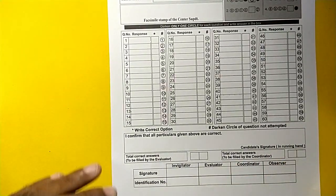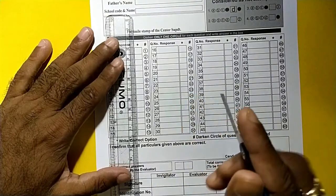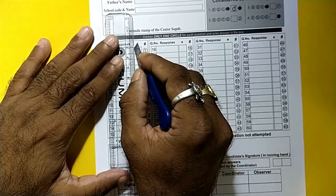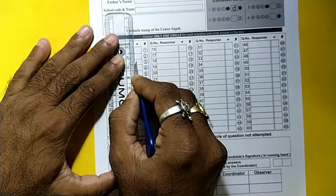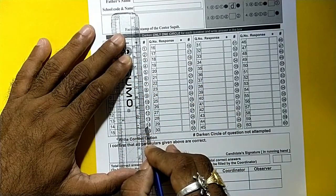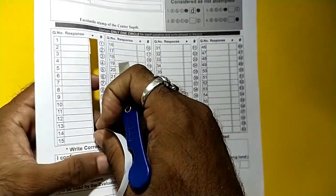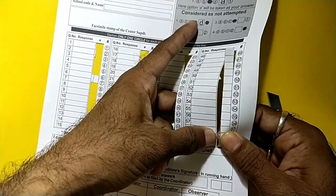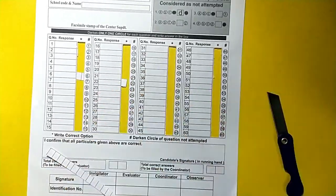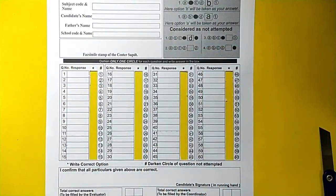Next, what we have to do is, just using a scale and a cutter, cut this box completely. Use a scale and carefully cut this. So now this is the first thing we have to do.